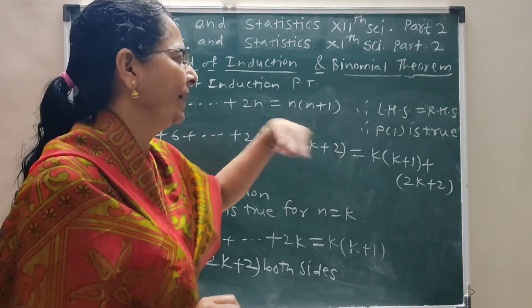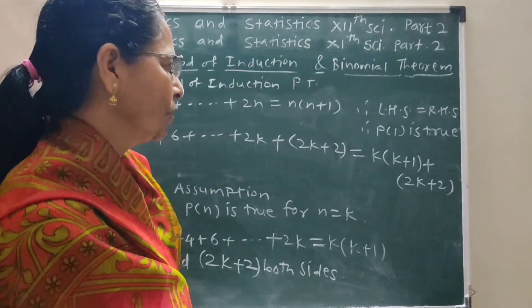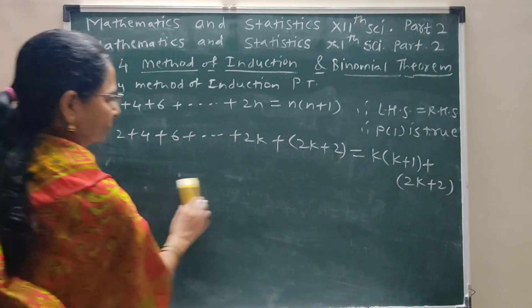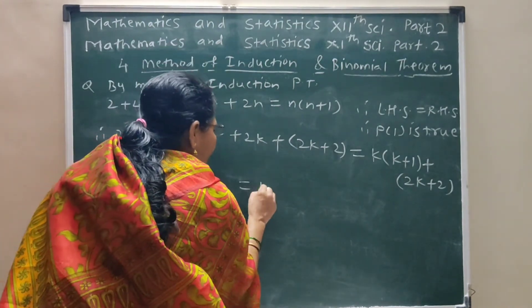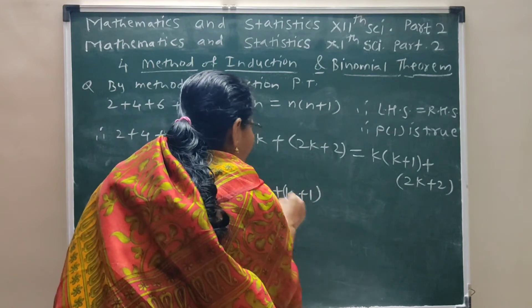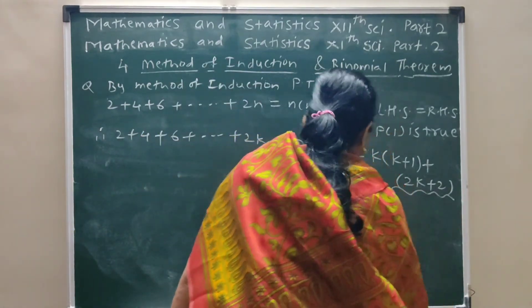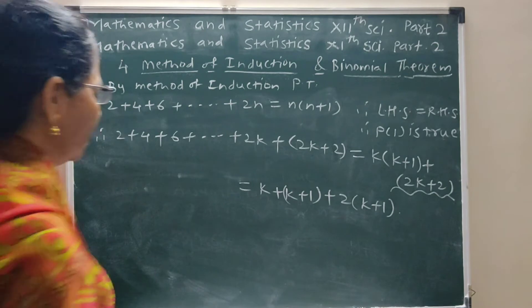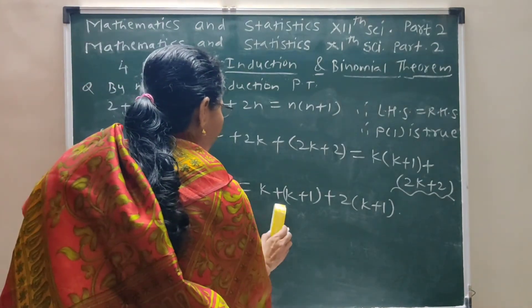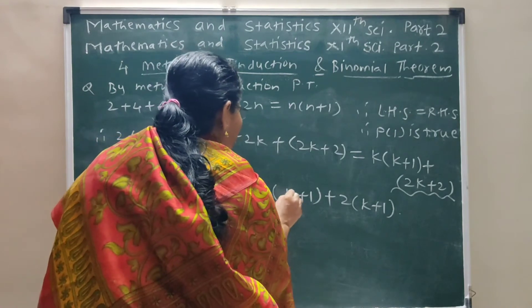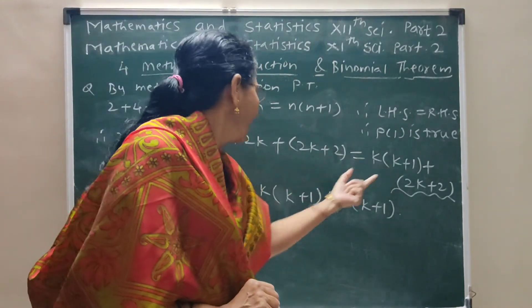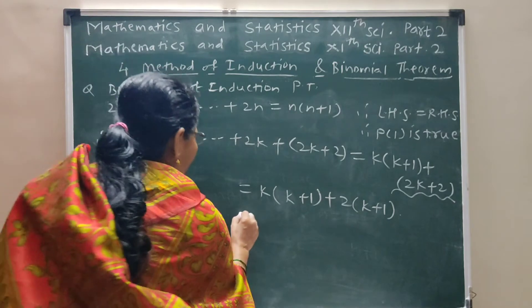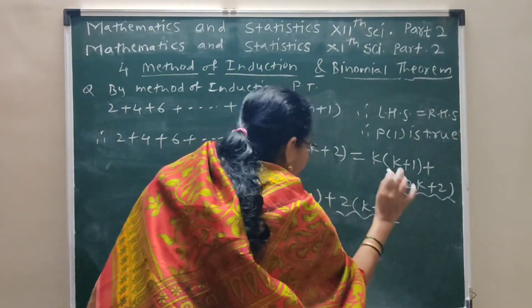On the RHS, k(k+1) + (2k+2): take 2 common from (2k+2) to get k(k+1) + 2(k+1). From these two terms, take (k+1) common to get (k+1)(k+2).